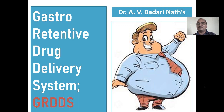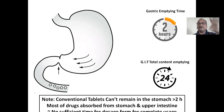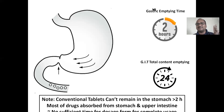The highlighted part is the stomach here. Gastric emptying time is two hours. Whatever you have taken — a food particle, a drink, water, cold drink, a tablet or capsule — maximum time it stays in the stomach is two hours. After that, the stomach becomes empty — gastric emptying.